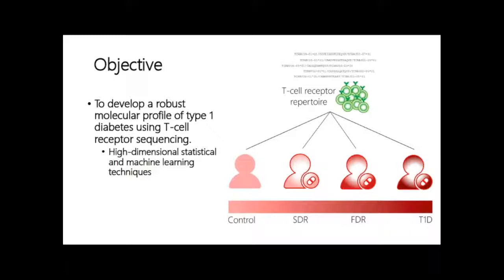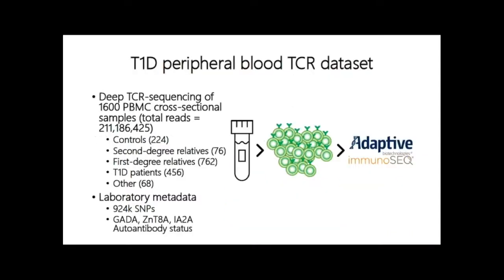We also have access to patients from first degree relatives and second degree relatives, because of the importance of genetics in this disease. We assembled a dataset with 1,600 repertoires from controls, type 1s, and those relatives. Because of the genetic impacts, we also performed extensive genotyping with 924,000 SNPs, which enables us to impute four-digit HLA, look at type 1 diabetes SNPs of interest, and SNPs involved in immune tolerance. We also have autoantibody status on these samples.